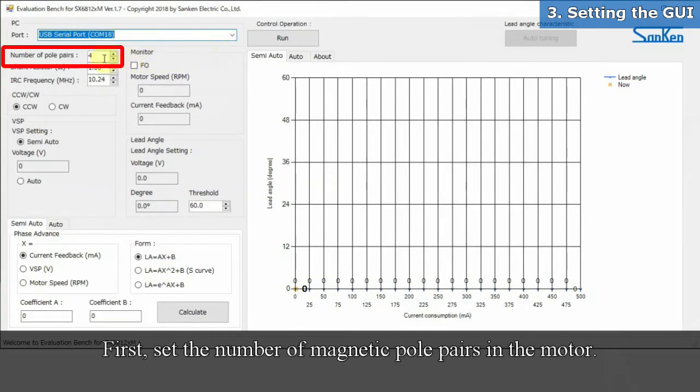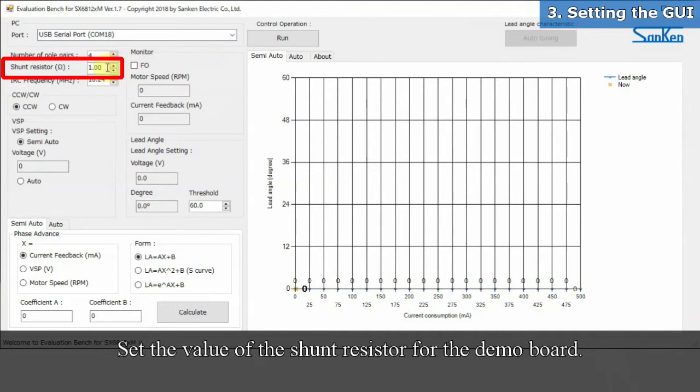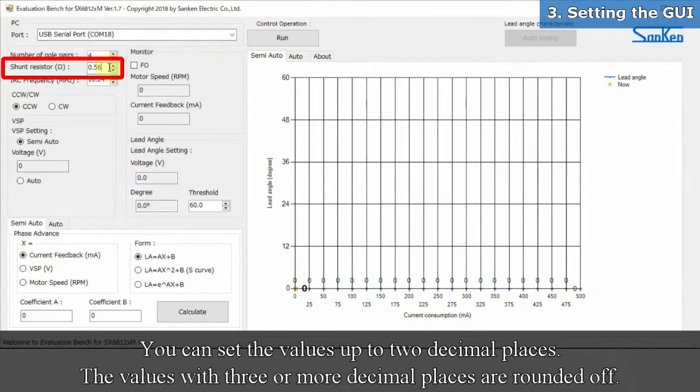First, set the number of magnetic pole pairs in the motor. Set the value of the shunt resistor for the demo board. You can set the values up to two decimal places. The values with three or more decimal places are rounded off.